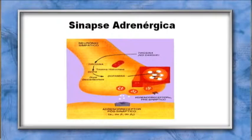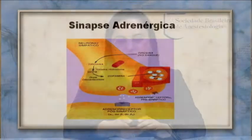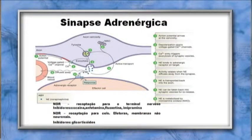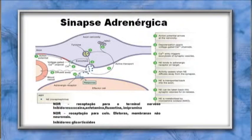Um impulso nervoso gera um potencial que promove a exocitose, e a noradrenalina ganha a circulação. Os receptores adrenérgicos são metabotrópicos. A noradrenalina pode ser destruída na fenda sináptica pela catecol-O-metiltransferase (COMT) ou reabsorvida por tecidos não neuronais. No interior do axoplasma, saindo da vesícula, pode sofrer ação da monoamino-oxidase (MAO). Parte da noradrenalina também pode sofrer transporte ativo (recaptação). É importante lembrar que drogas como cocaína, anfetamina, fluoxetina e imipramina bloqueiam esse mecanismo de captação 1. Os inibidores da captação 2 (tecidos não neuronais) são os glicocorticoides.